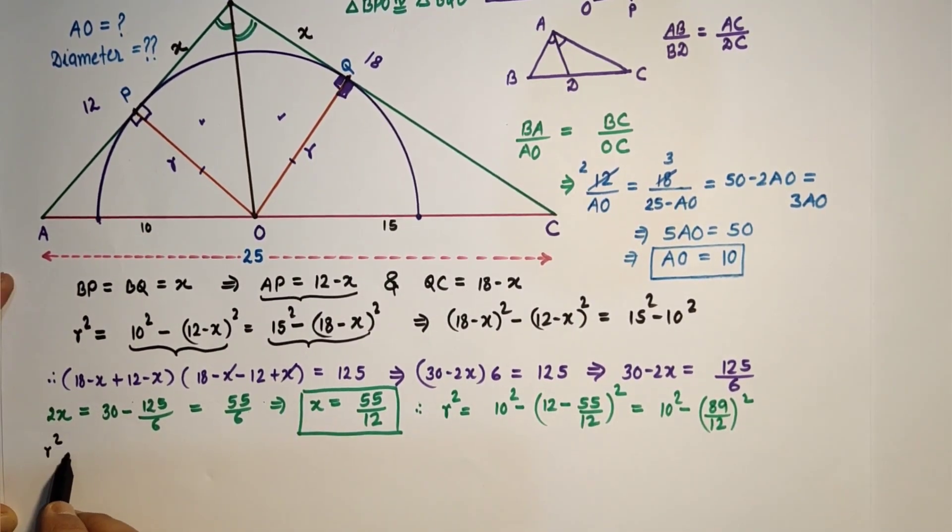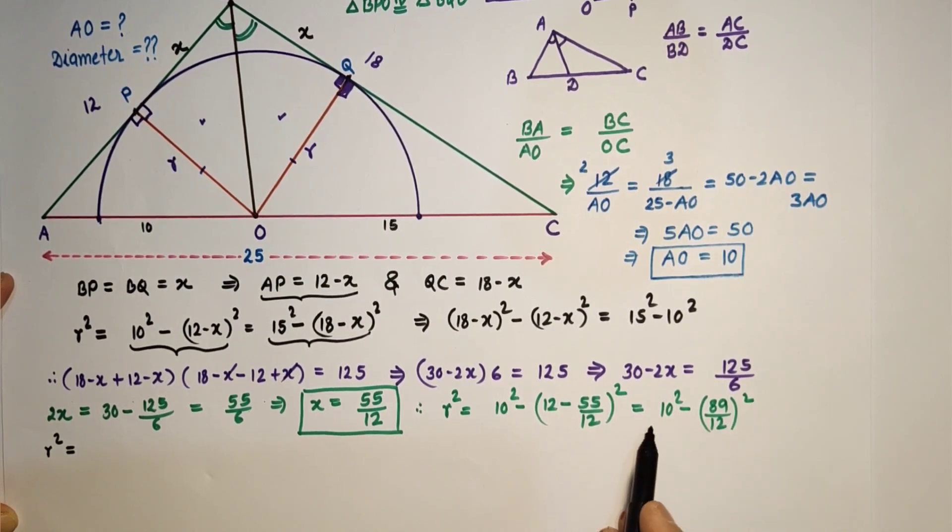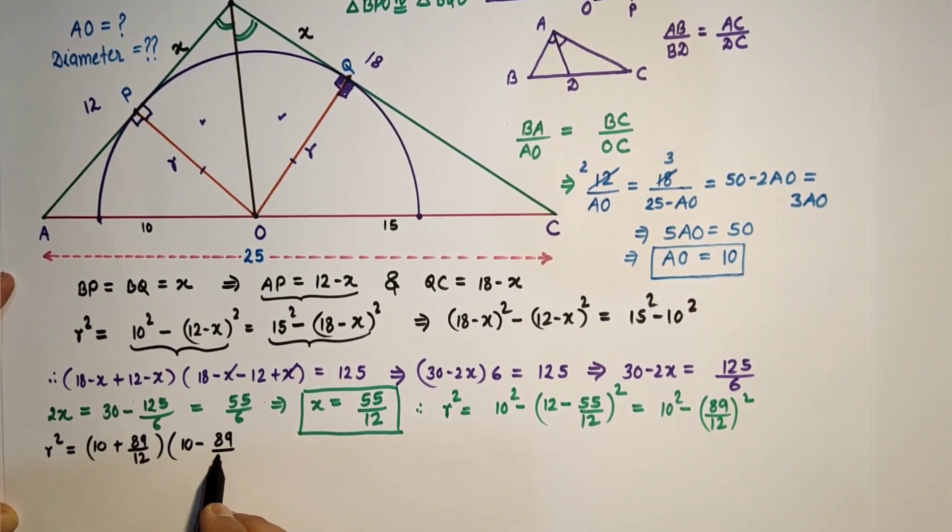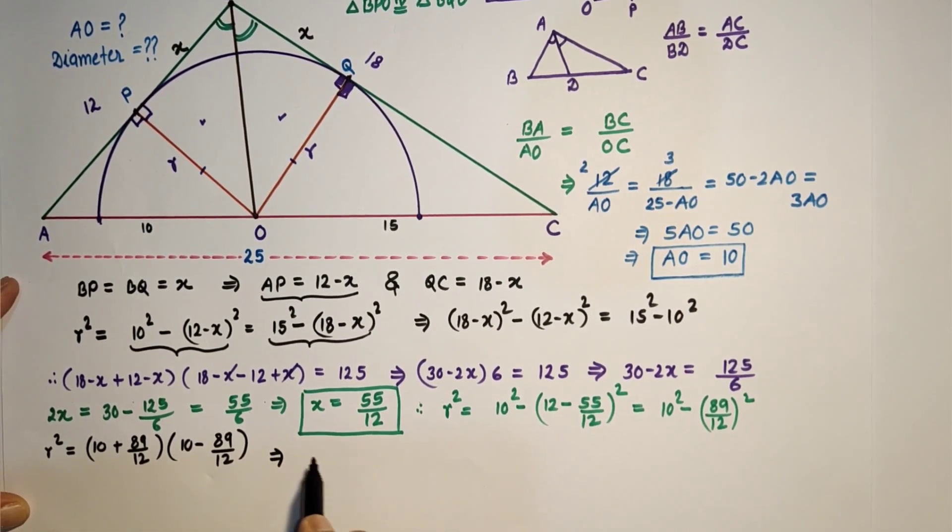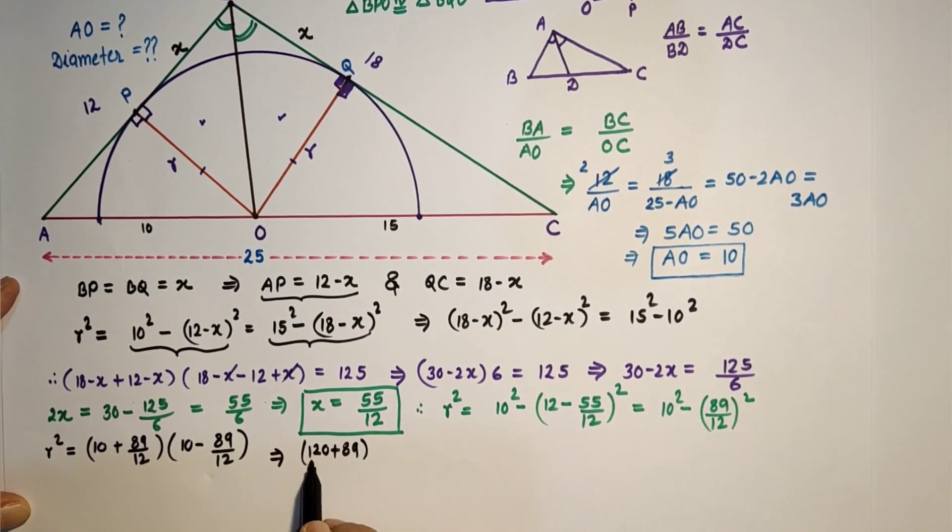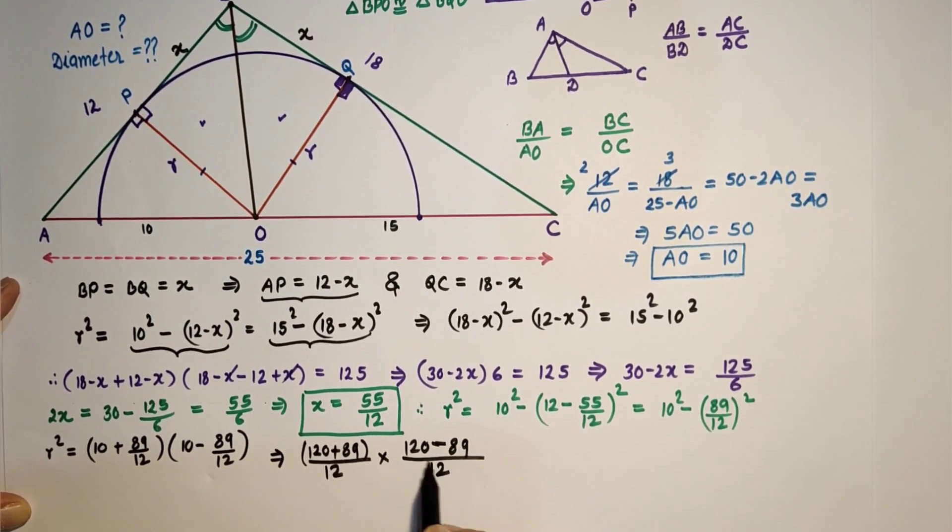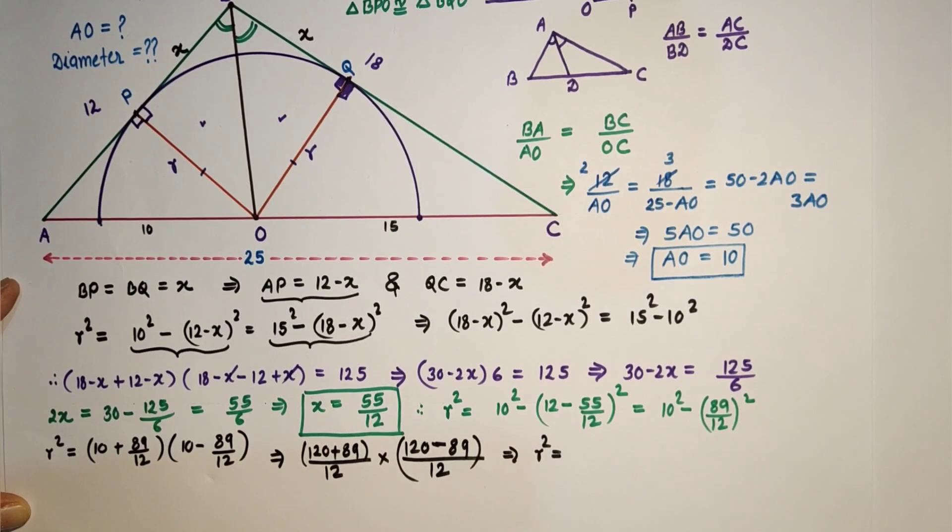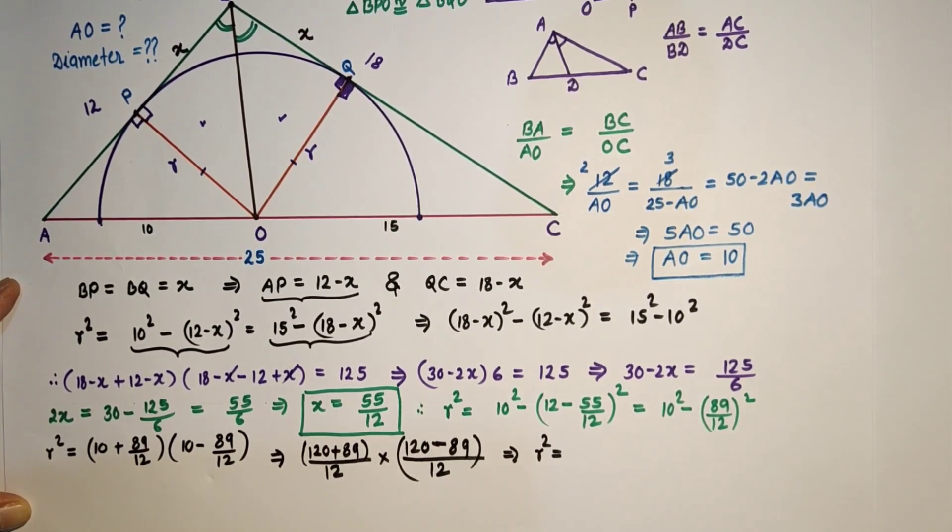So 10 minus 89 by 12, so that is equal to (120 plus 89) upon 12 into (120 minus 89) upon 12. That is equal to R² is equal to 120 minus 89 upon 12, 120 minus 89 is 31.